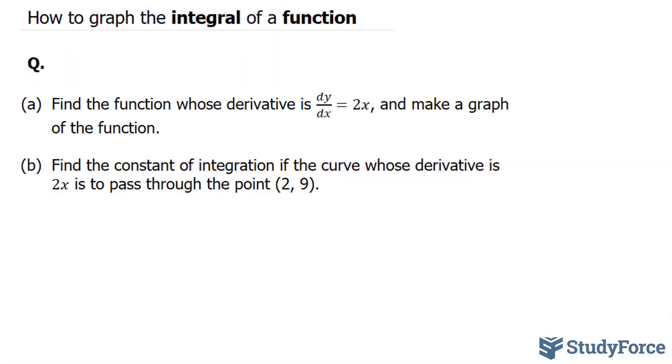dy over dx equals 2x can be written like this: dy equals 2x dx. What I've done is multiplied both sides by dx of this equation, and I ended up with this.